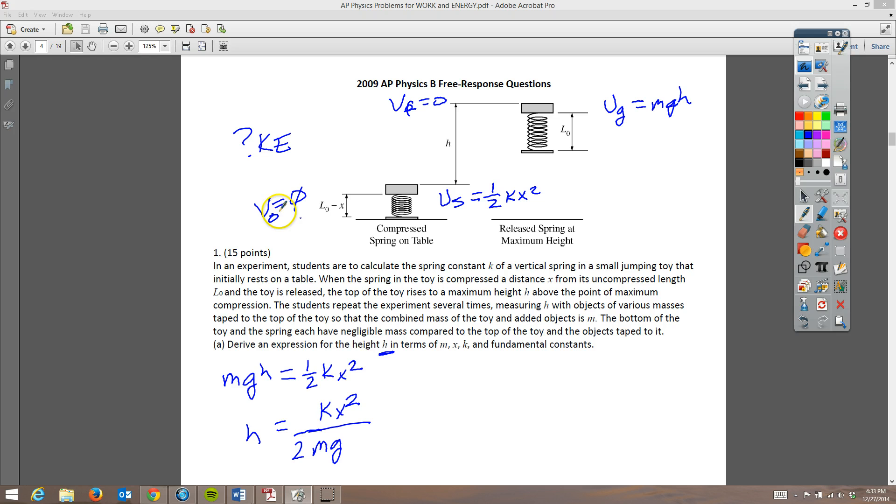You get one point for kind of showing what's going on here. You might say energy is conserved. But I think they might give it to you for just having this expression. So now you have the correct expression. You have it rewritten for H, because it does say find this for H. If you just left it this way, you won't get all the points. And you get a point for either saying energy is conserved or trying to show all this up top.